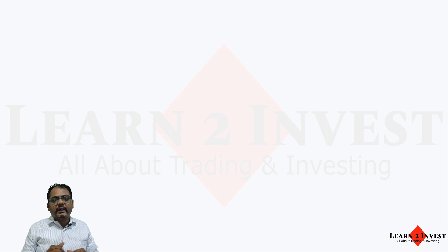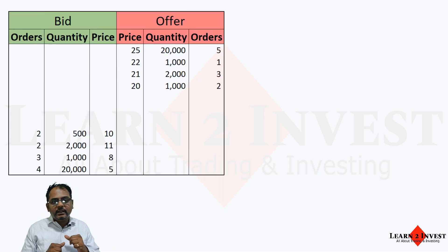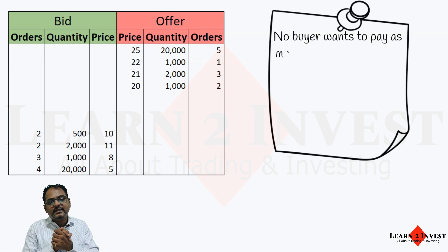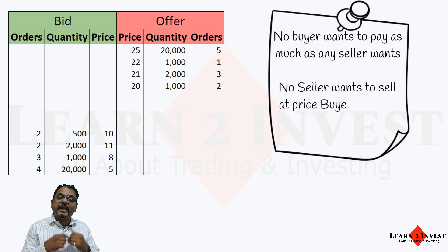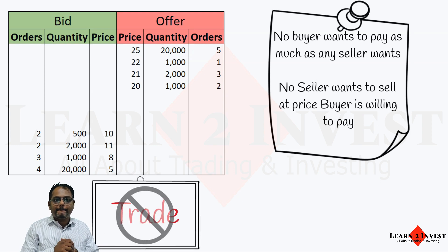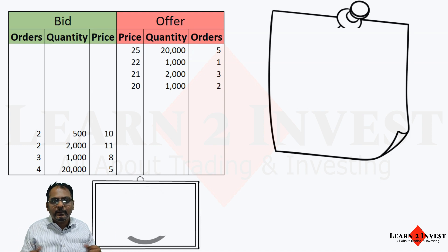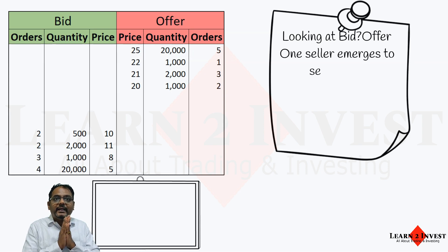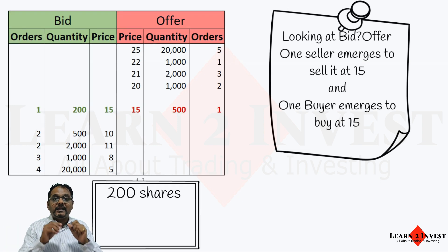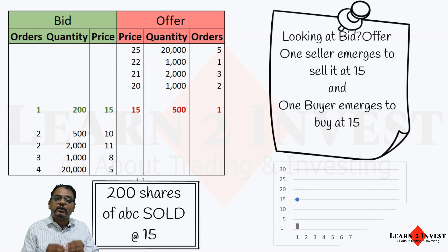In the stock market, you have bidders and sellers or offers. Say there are two buyers for 500 stocks at 10 and two sellers for 1000 stocks at 20. There is no buyer willing to buy at the seller's price, and no seller willing to sell at the buyer's price — so no trade can happen. But after a while, one seller emerges to sell at 15 and one buyer emerges to buy at 15. Now 200 shares get transacted at 15, and a value is established for this stock at 15.